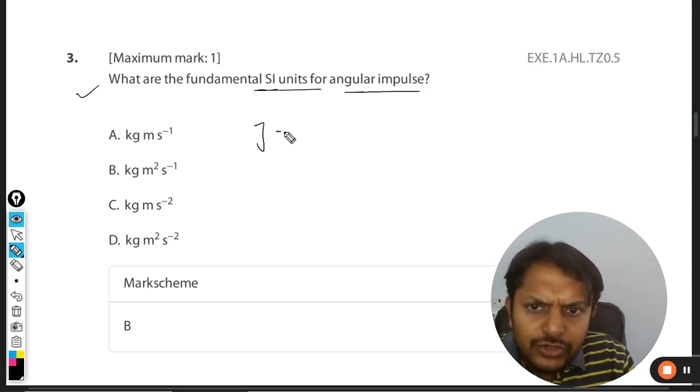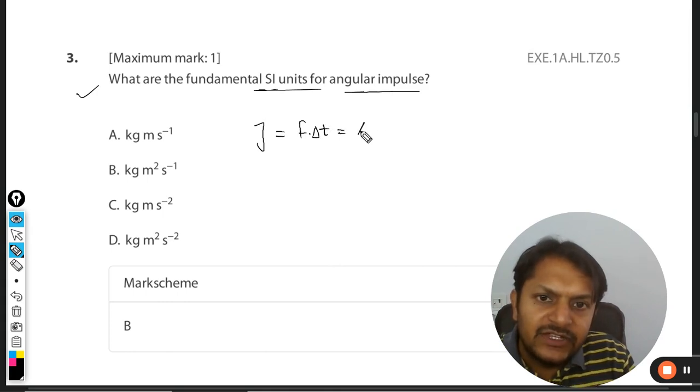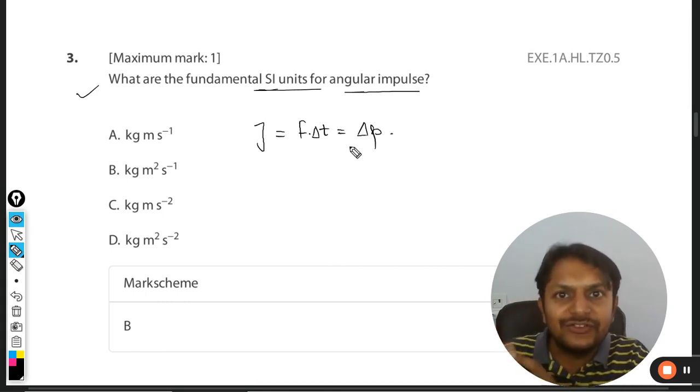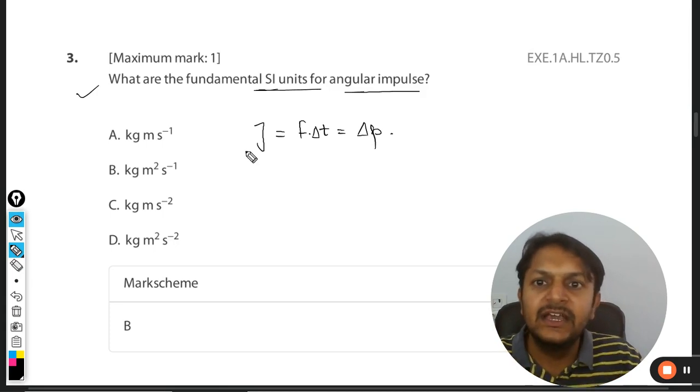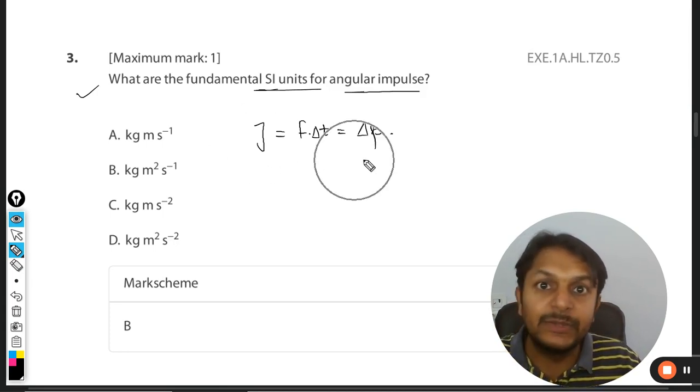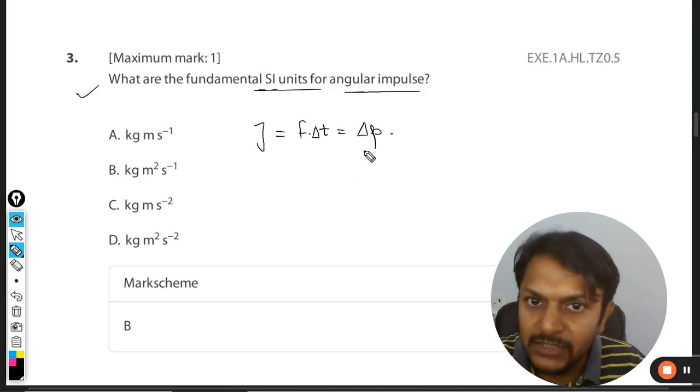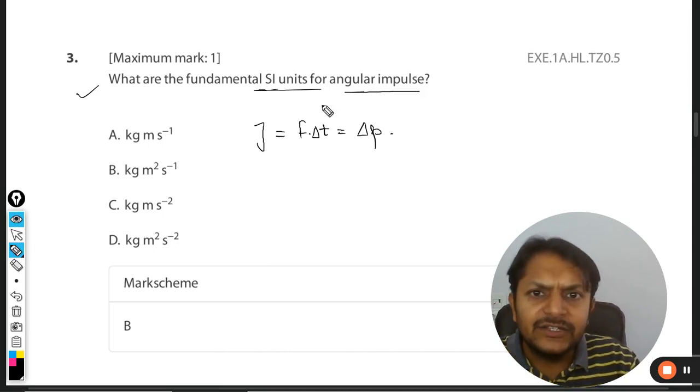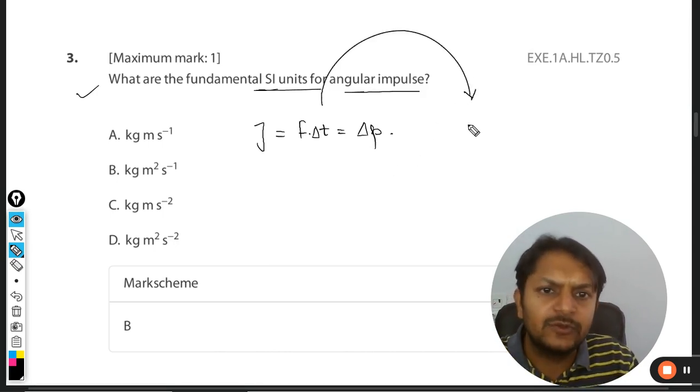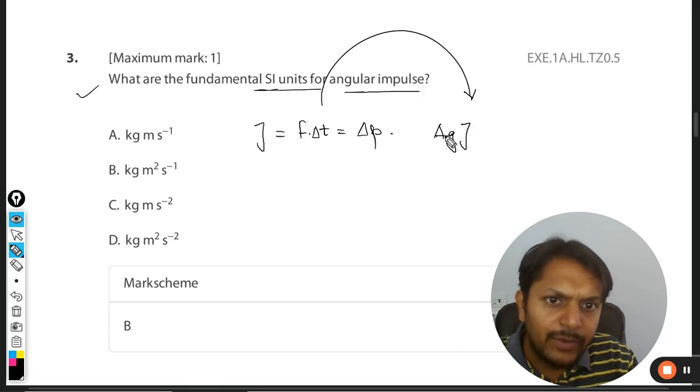Impulse in translation is defined as F·Δt, which is actually equal to angular momentum. In translational motion we can clearly see that the units for the impulse will be same as that of the unit of momentum.